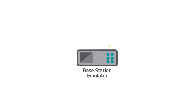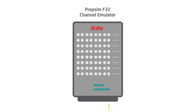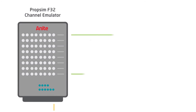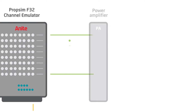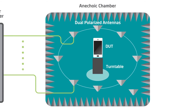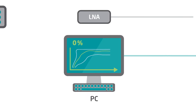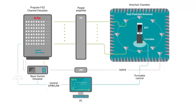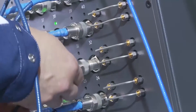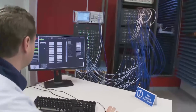The base station emulator emits RF signals that pass through the channel emulator, which applies a realistic fading model to the signals. A power amplifier amplifies the signals, which are then received by the MIMO device placed on a turntable in the middle of the chamber. The uplink signal from the device is emitted back to the base station emulator. The entire setup is typically automated and controlled by a PC.